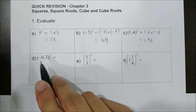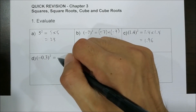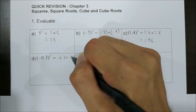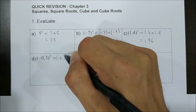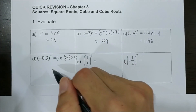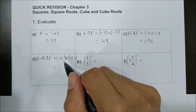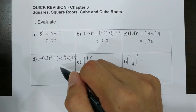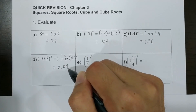Negative 0.3 squared means negative 0.3 times negative 0.3. Negative times negative, you get positive. 0.3 times 0.3, you get 0.09.